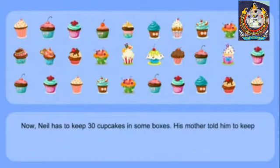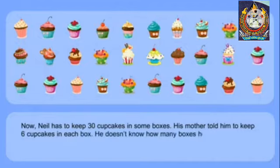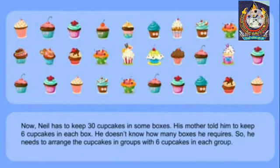Now Neil has to keep 30 cupcakes in some boxes. His mother told him to keep 6 cupcakes in each box. He doesn't know how many boxes he requires, so he needs to arrange the cupcakes in groups with 6 cupcakes in each group.